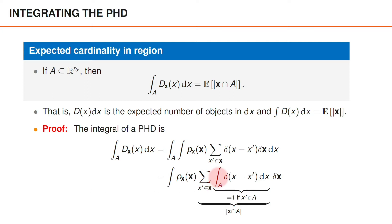The integral over the vectors x in the region A takes the value 1 if x' is in A and 0 otherwise. By summing that integral over all elements x' in the set boldface x, we simply count how many of the elements in boldface x are in A. We can therefore write the result as the cardinality of the intersection between boldface x and A. By recalling that the set integral of the multi-object PDF times a function is the expected value of that function, we obtain the desired result: integrating the PHD over some area A gives the expected number of objects in the area A.